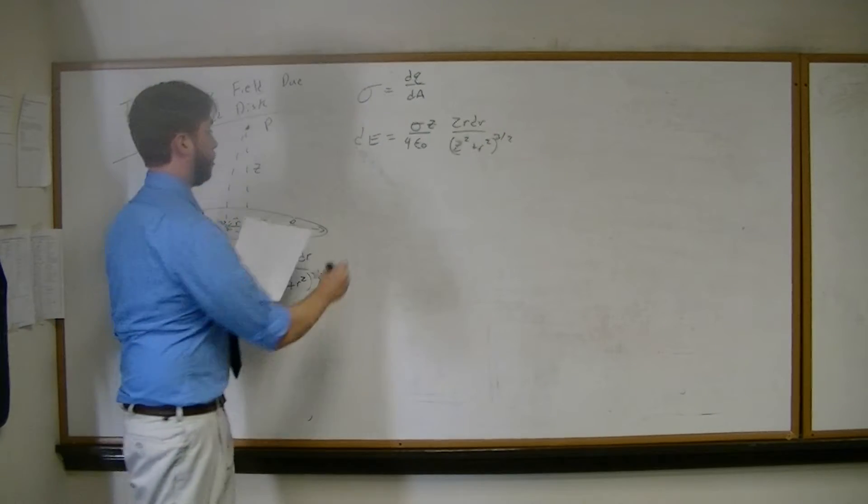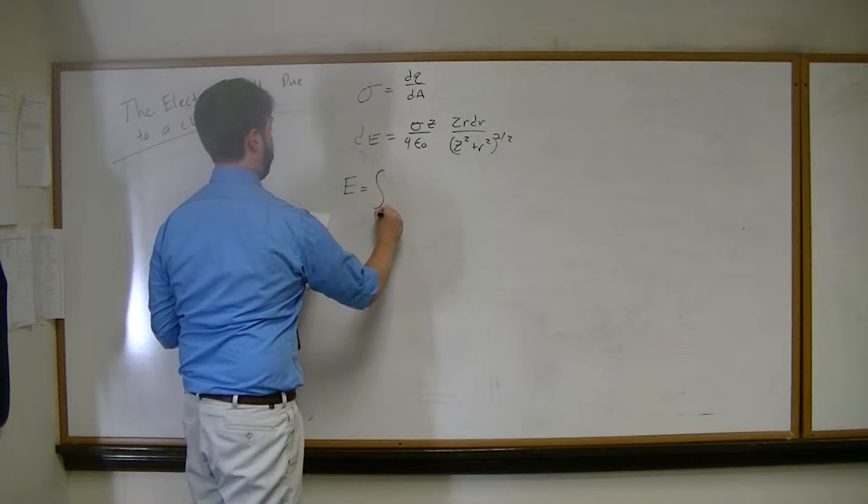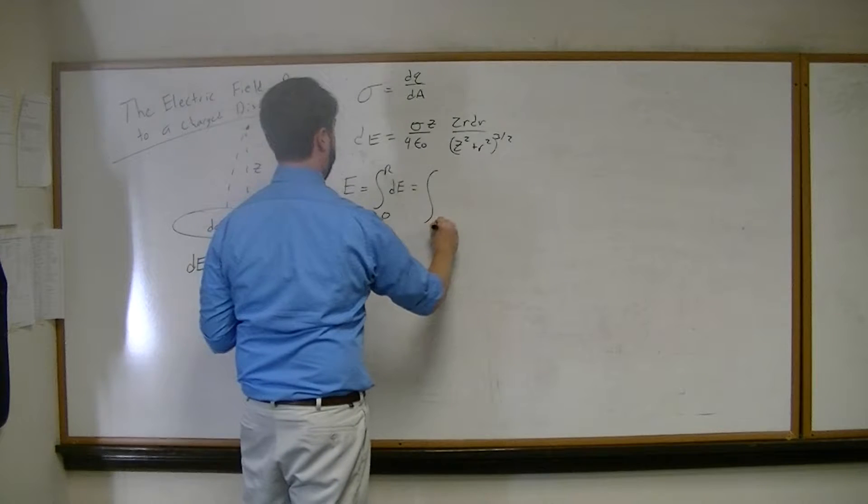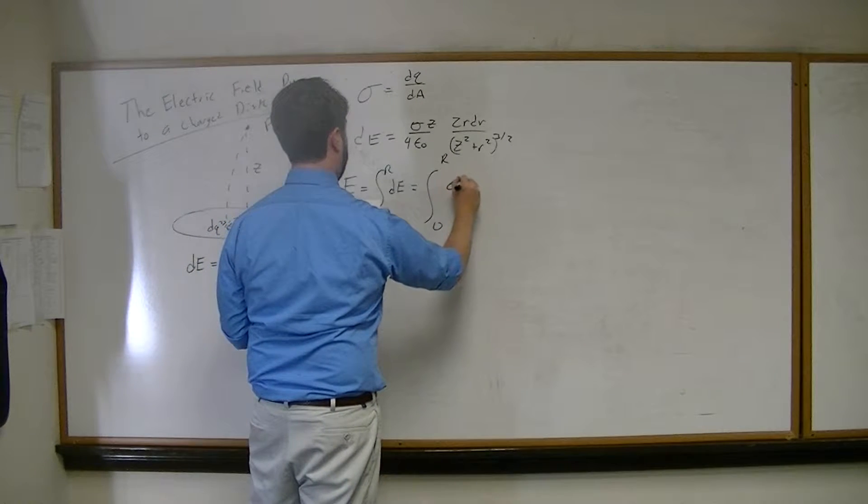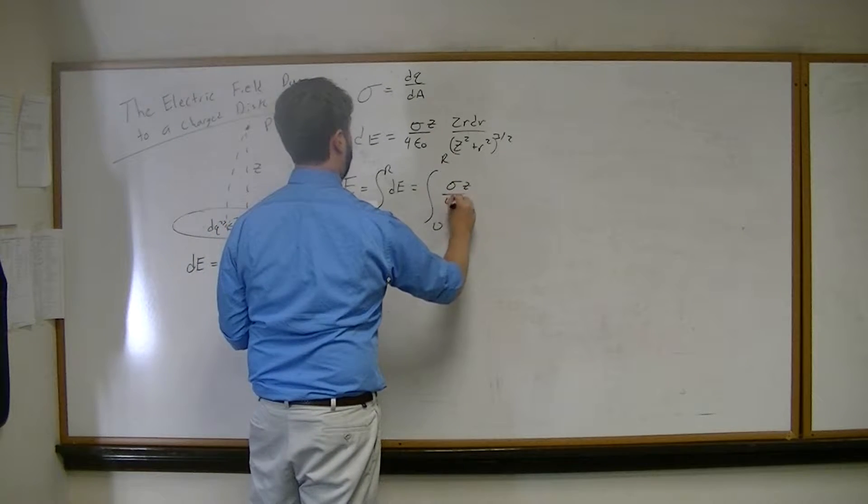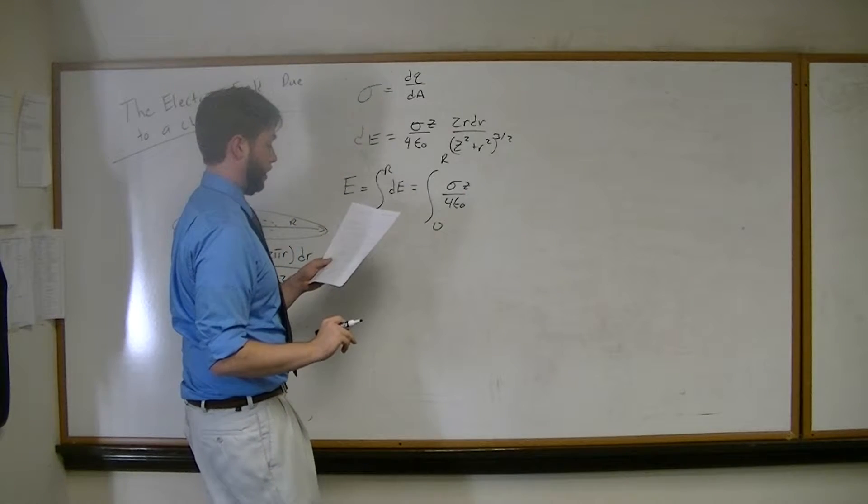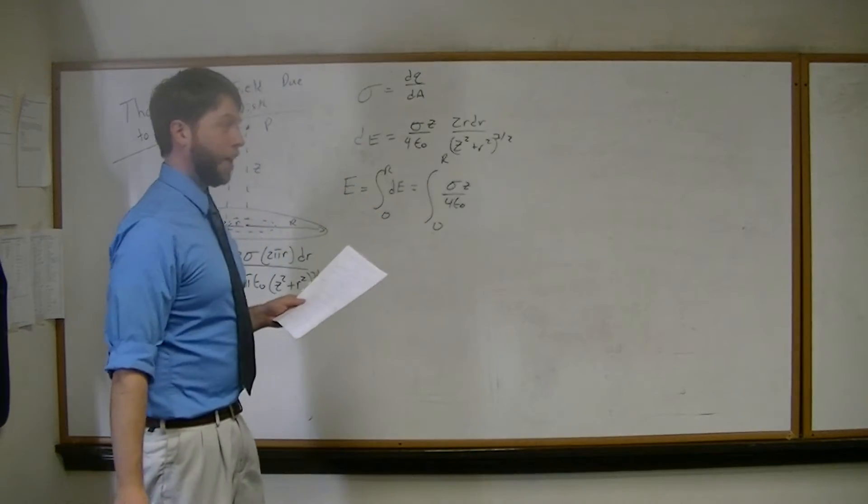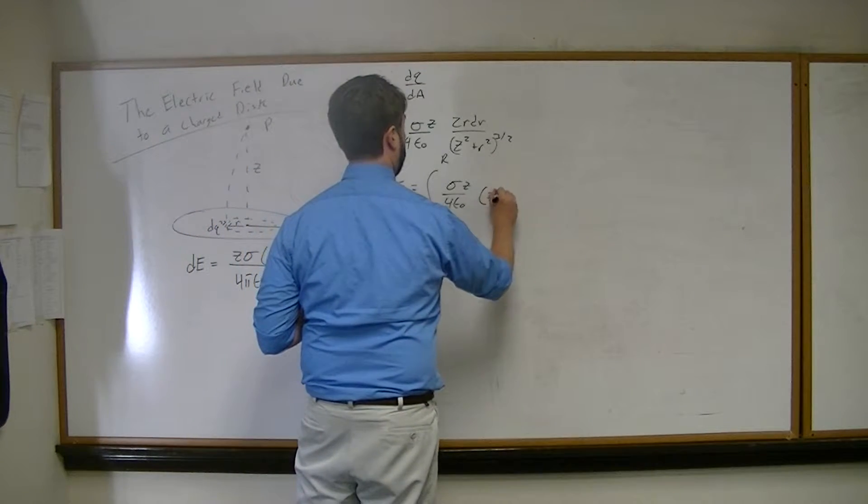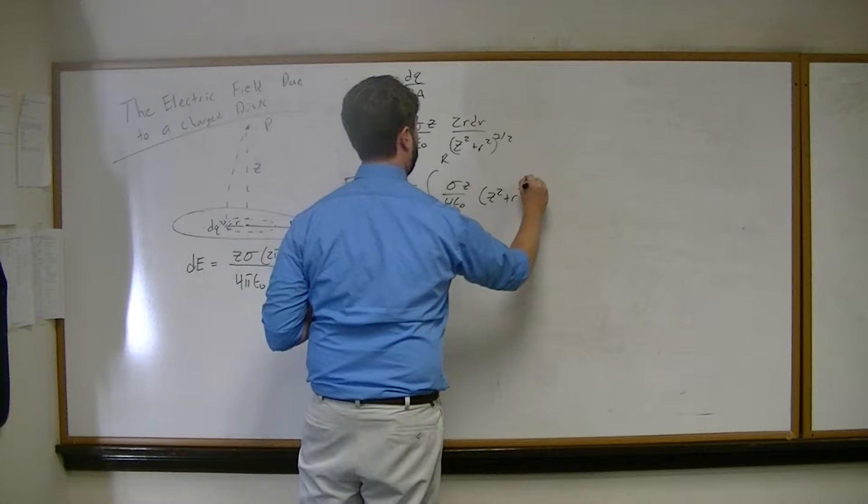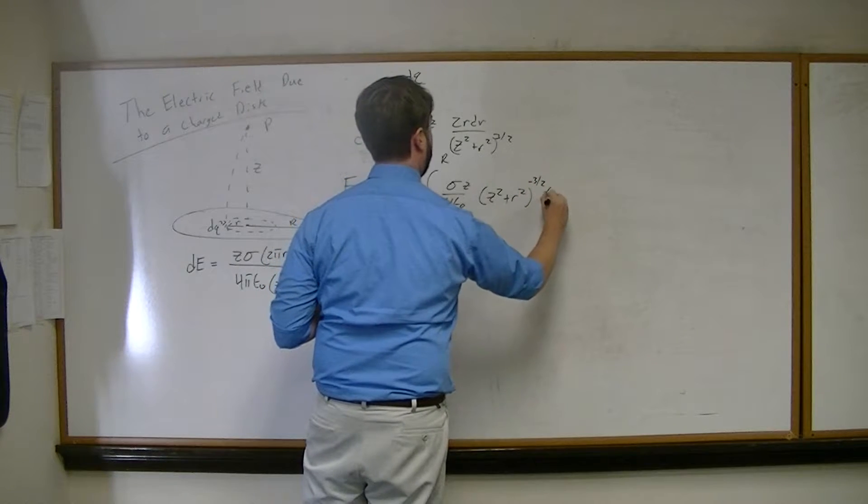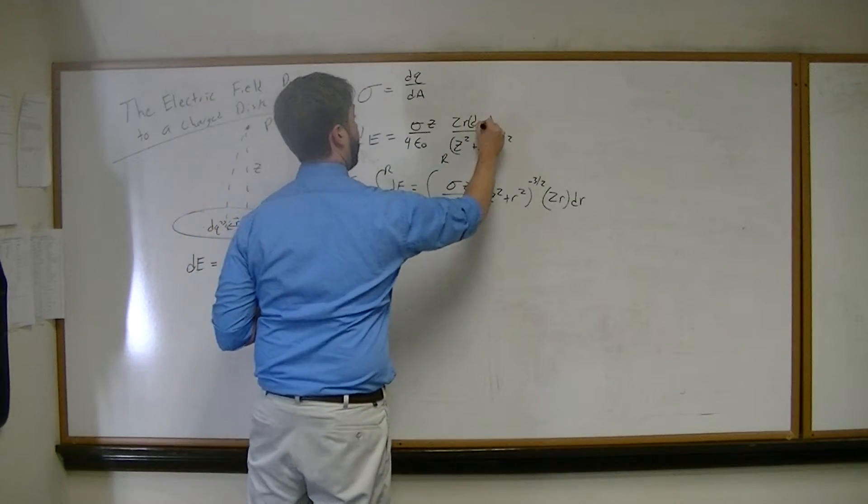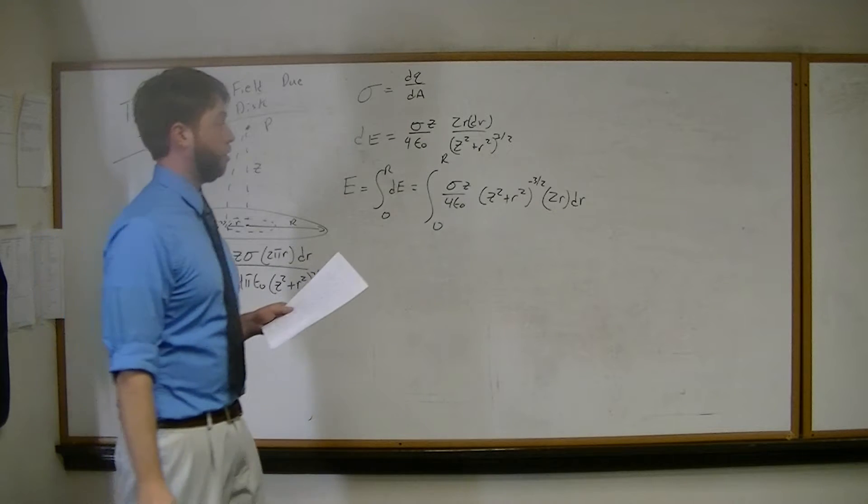Now set up the integral. So E is equal to the integral from 0 to r of dE or the integral from 0 to r of sigma z over 4 epsilon naught. That's just a constant. That will make life very easy. I'm going to put this in terms of a negative exponential so I can easily see what's going on there.